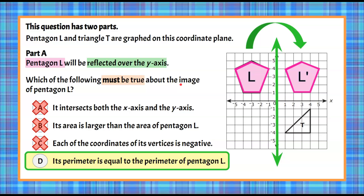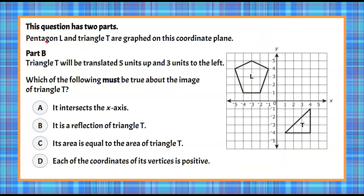All right, let's move on to Part B. This question still has two parts. We still have pentagon L and triangle T on the coordinate plane. Triangle T will be translated five units up and three units to the left. Which of the following must be true about the image of triangle T? You're given four additional statements to determine which is true. I'm going to have you pause the video now, determine which choice is true, and come back and hit play.